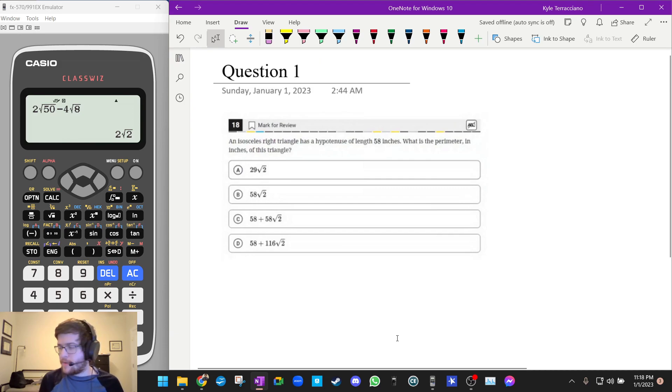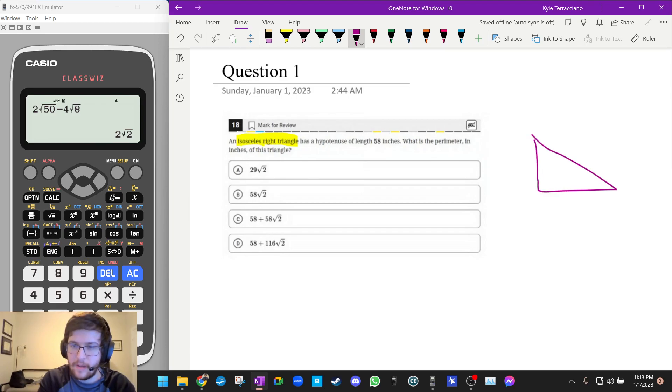So I already went over how to do this one in my practice test one video. Please go watch that video if you're not sure where to begin. I'm going to skip to the end. So an isosceles right triangle is a special name for a 45-45-90 triangle, which is in the reference sheet.